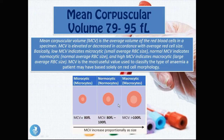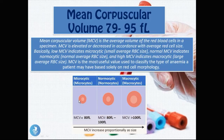The normal red blood cell size is between 79 and 95 femtolitres. When the red blood cell is too large it is called a macrocytic cell — any value over 95 femtolitres. When it is smaller or shrunken it is called a microcytic red blood cell — any value below 79 femtolitres.